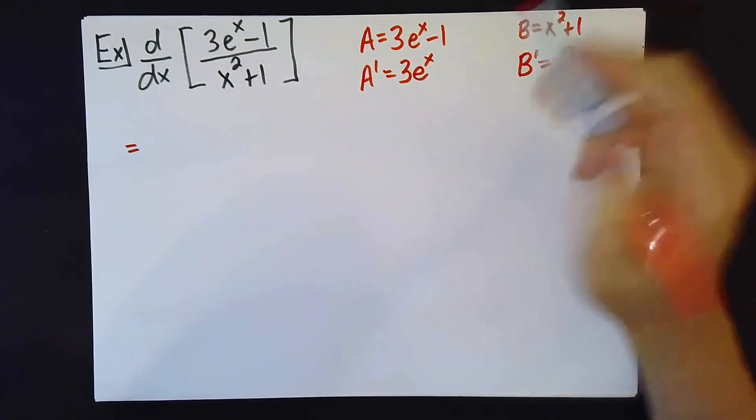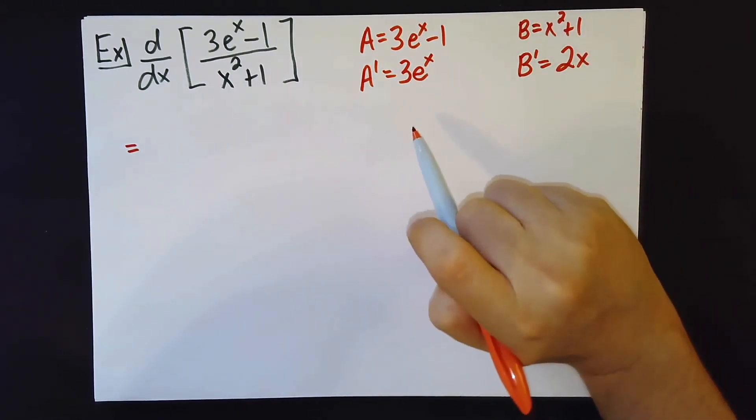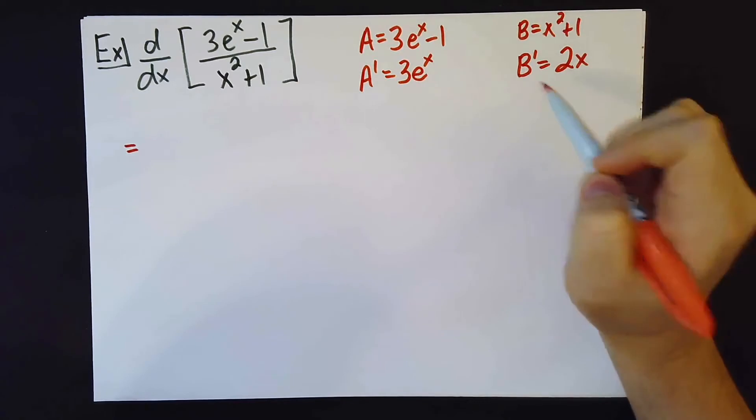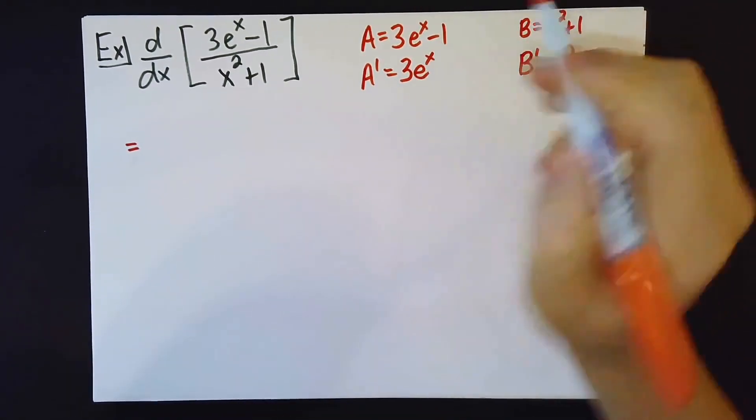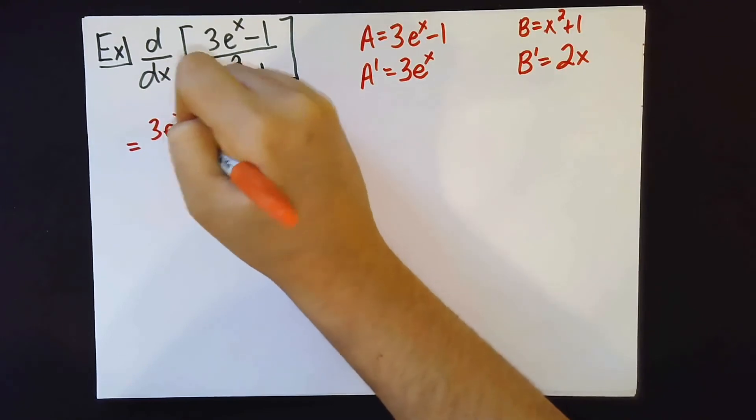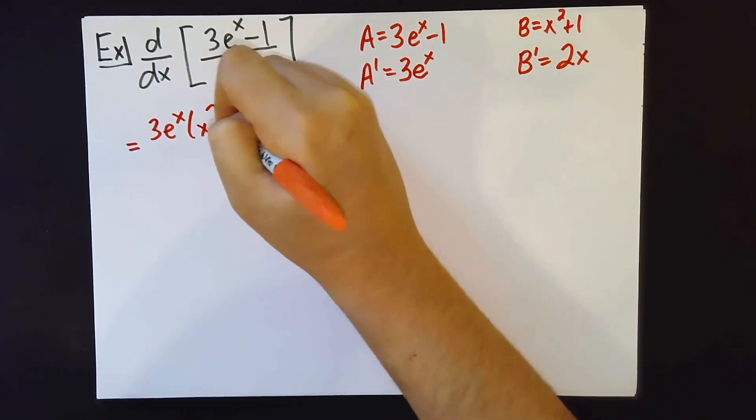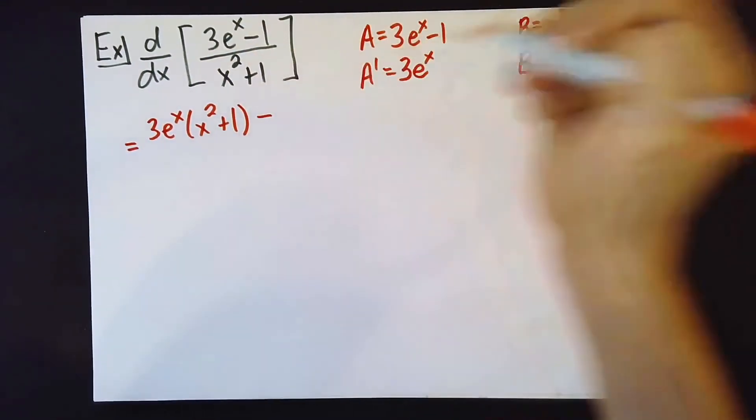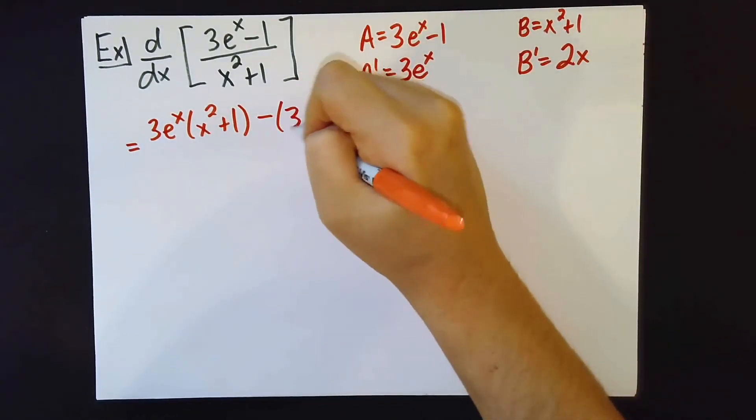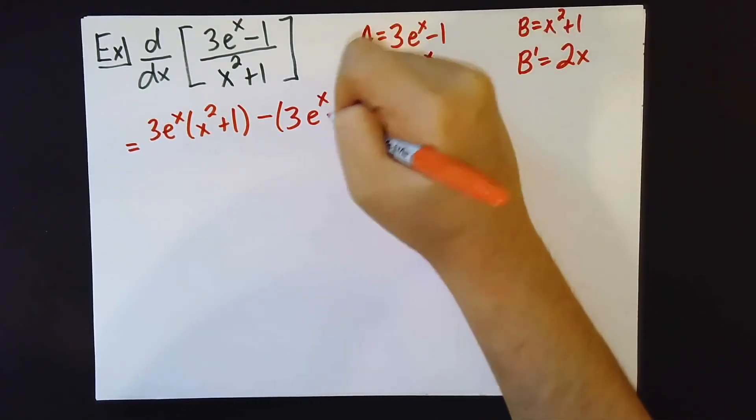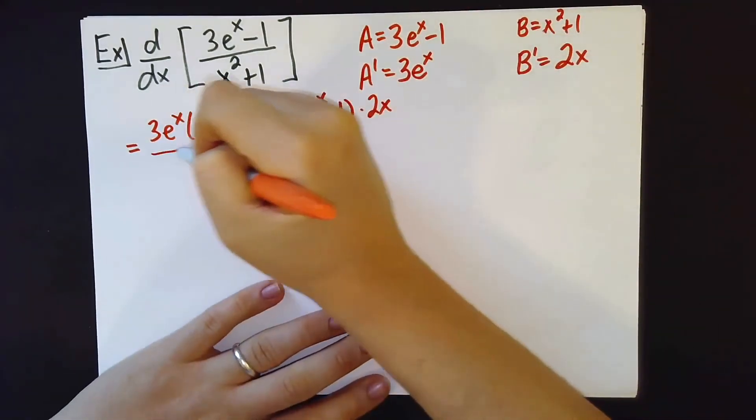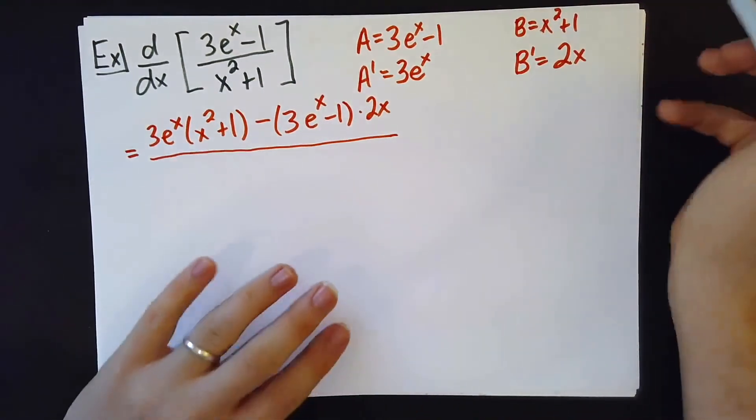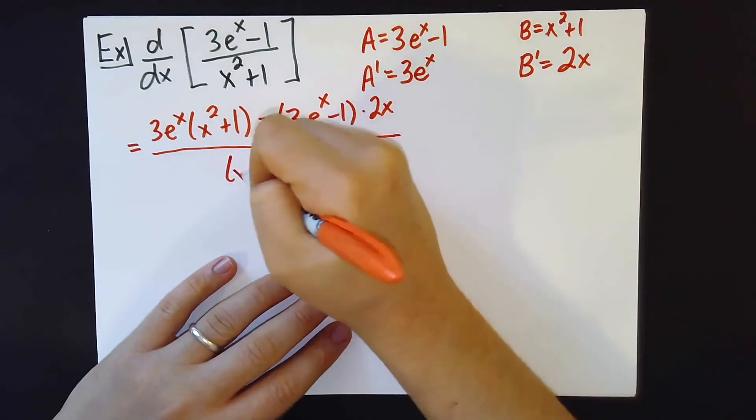So, following our formula, which you'll notice takes the form of a cross, the way I write this, we'll write 3e to the x times x squared plus 1 minus 3e to the x minus 1 times 2x, all divided by x squared plus 1 squared.